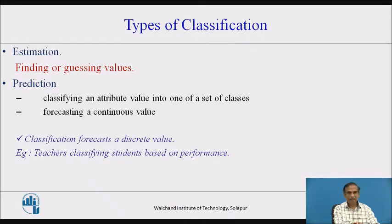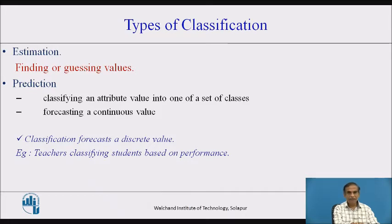Classification however usually forecasts a discrete value — one or zero — associating it to belong to a class or not belong to a particular class. As an example, teachers classify students based on performance as weak students, very good students, and average students.